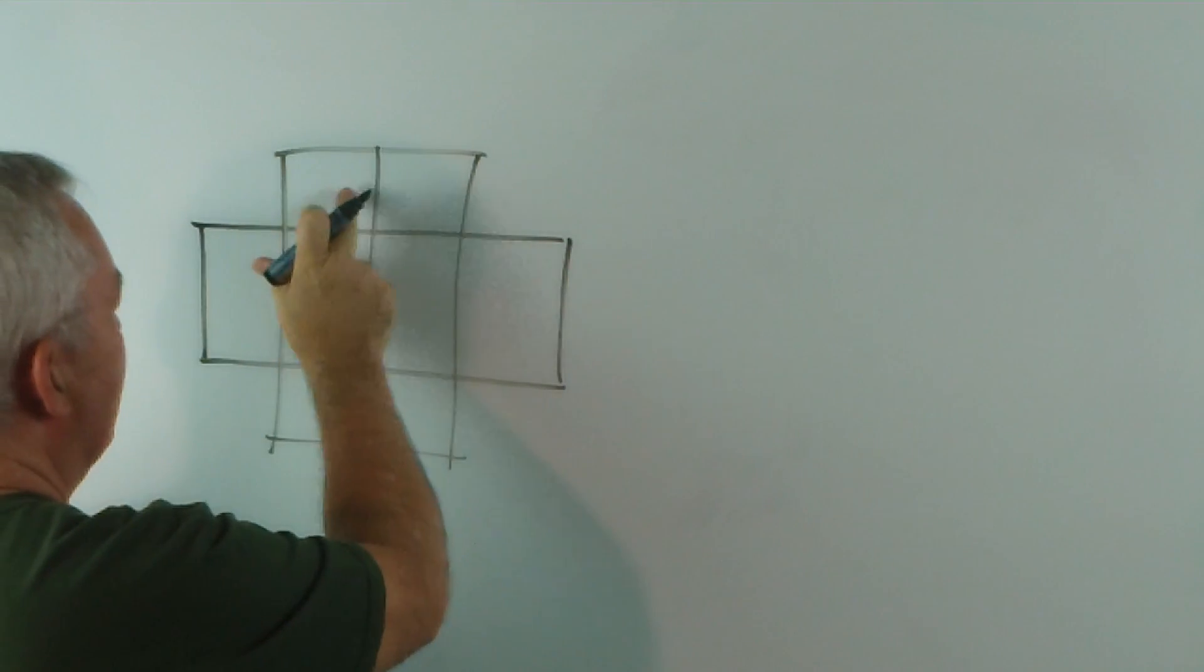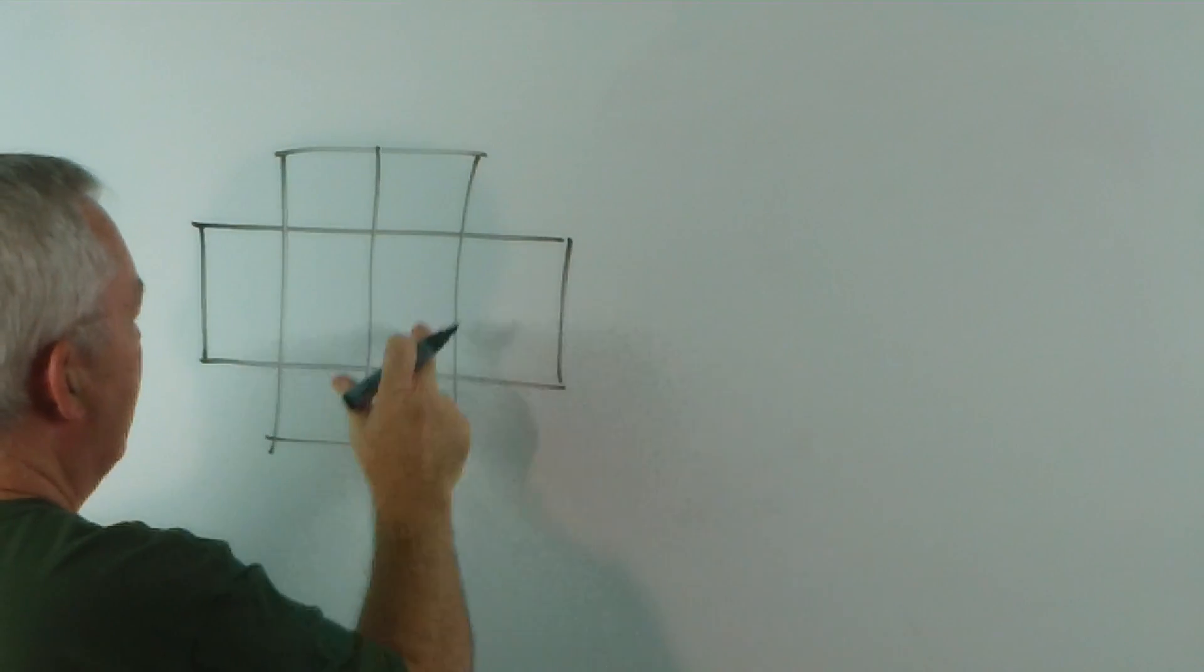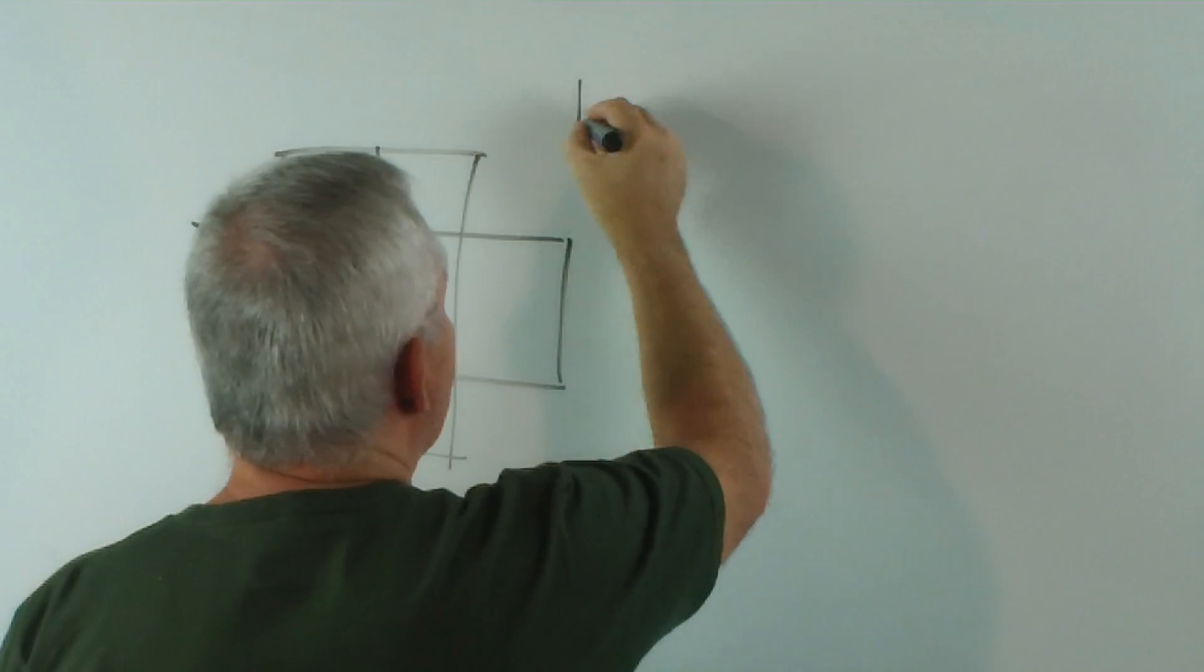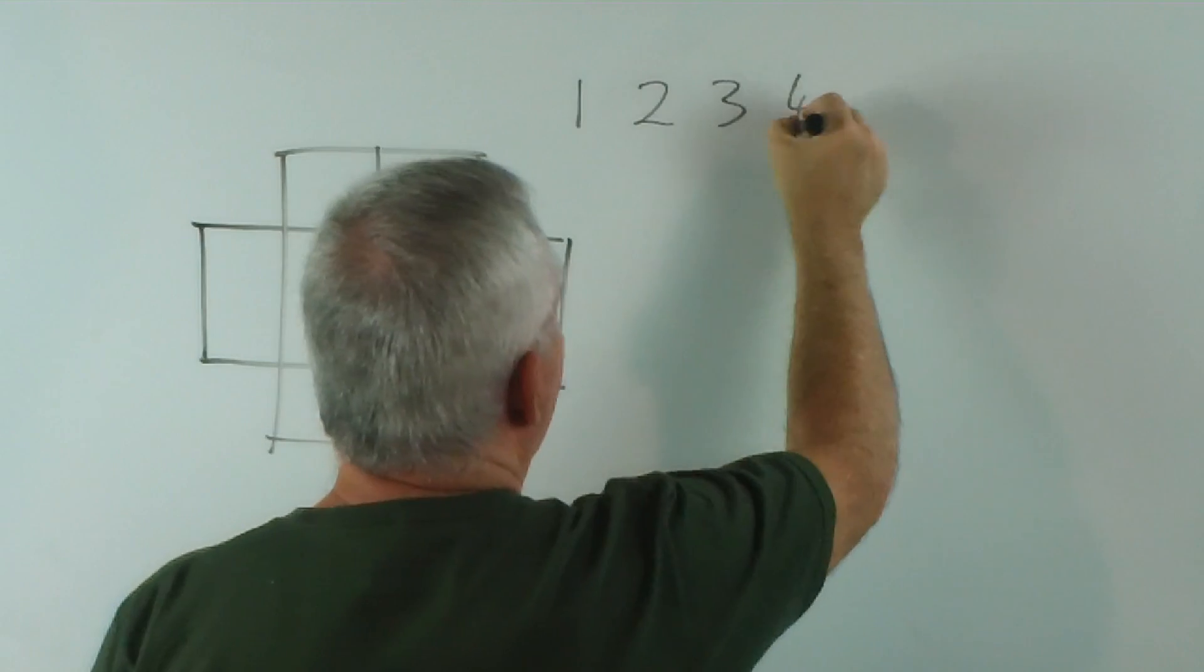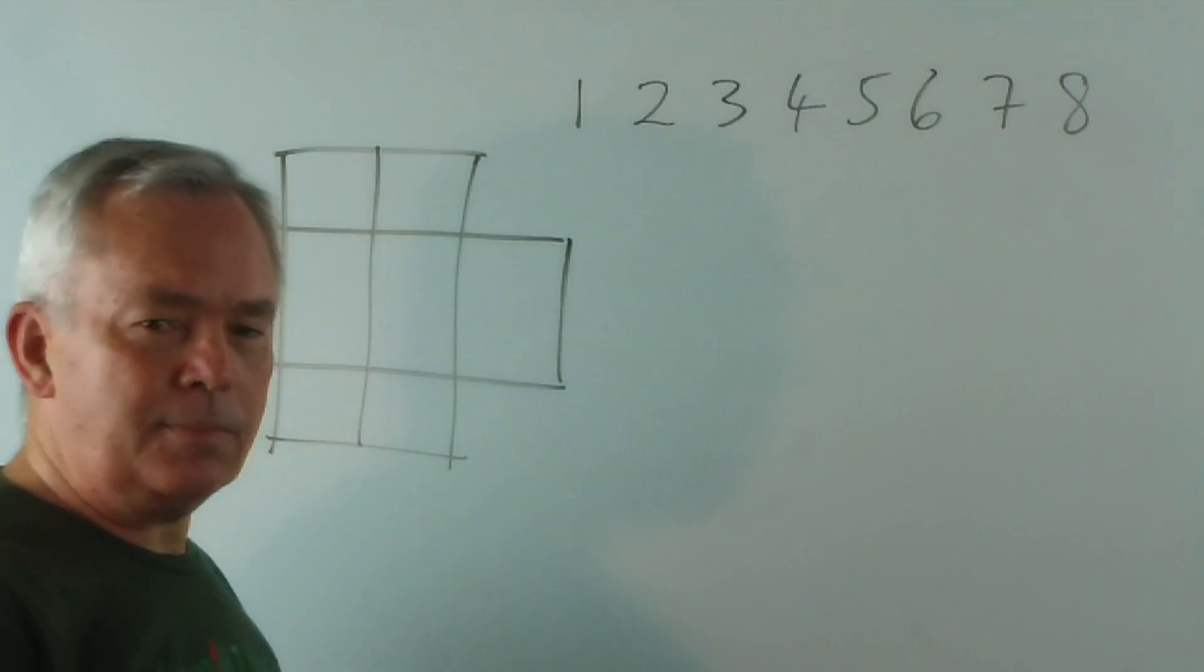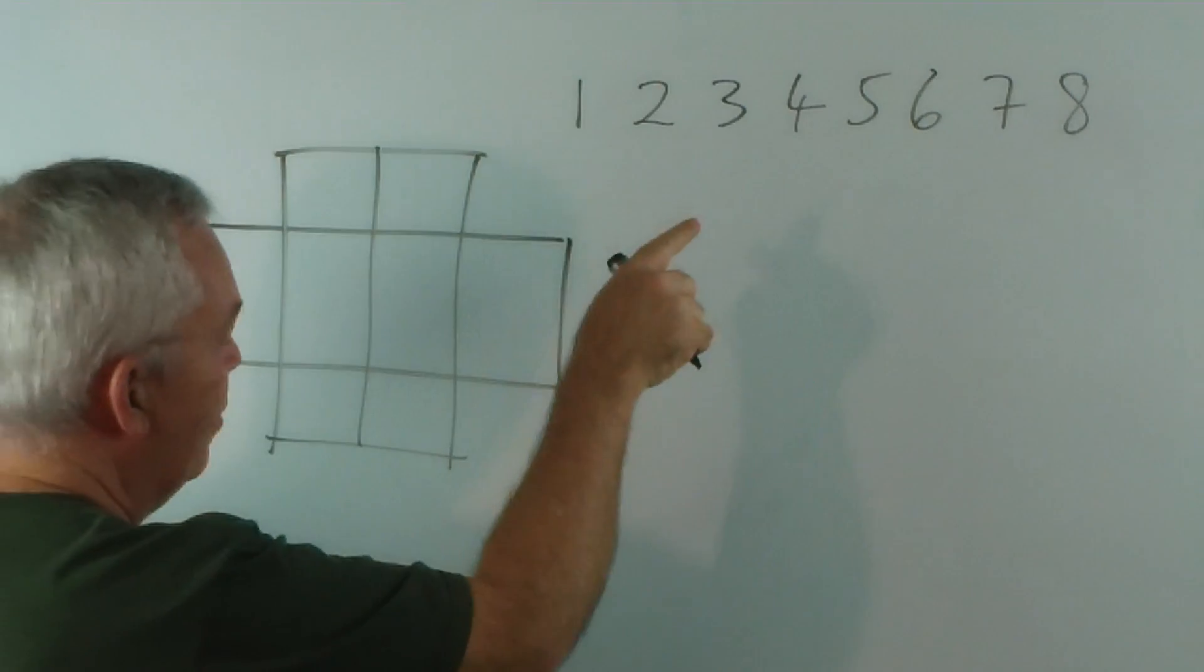Notice that it has eight squares. One, two, three, four, five, six, seven, eight. We're not counting the big composite squares. Just eight little squares. And you're given the numbers one to eight. And you have to place one of them in each square.